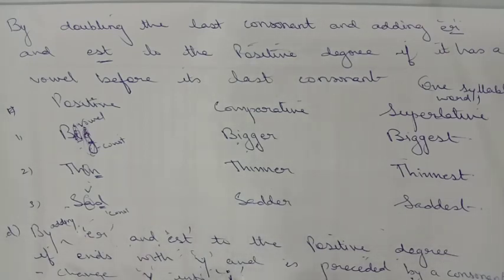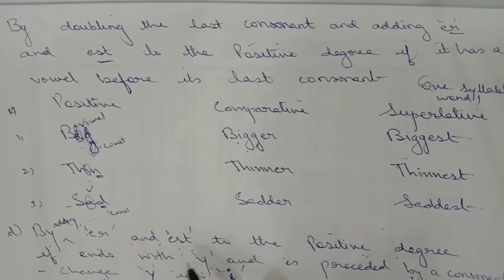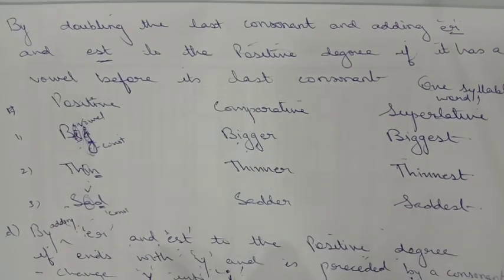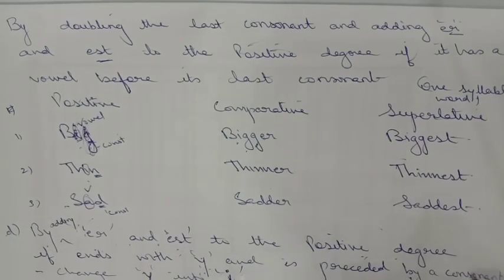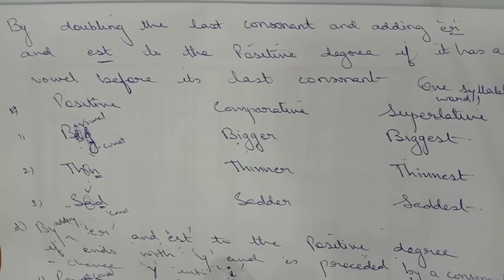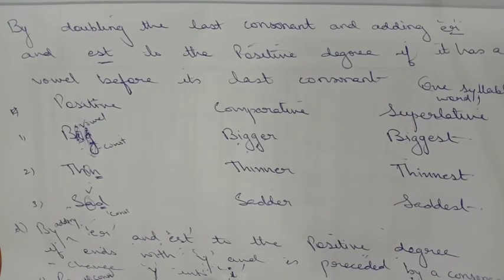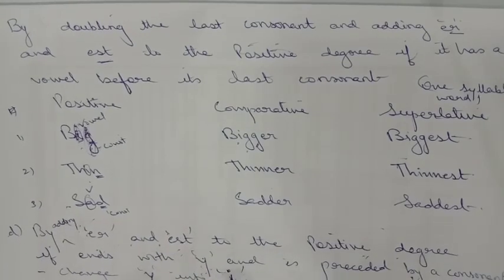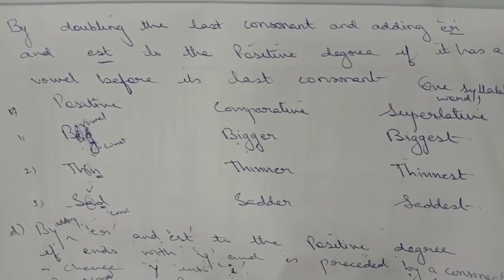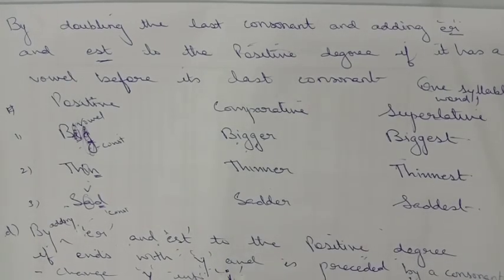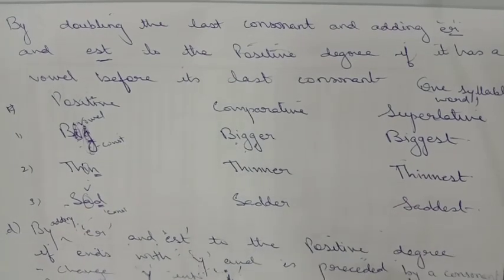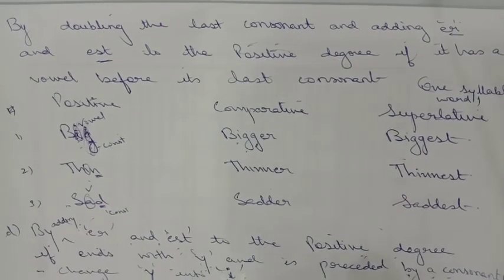Rule four: by changing Y to I and adding E-R and E-S-T if the word ends with Y preceded by a consonant. For example: 'pretty' becomes 'prettier' and 'prettiest'; 'lovely' becomes 'lovelier' and 'loveliest'.